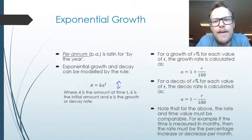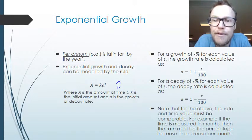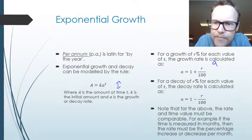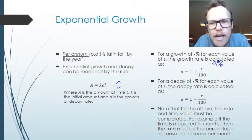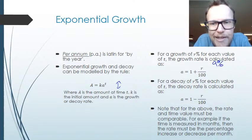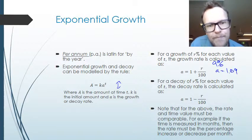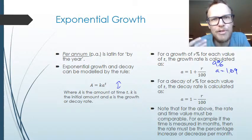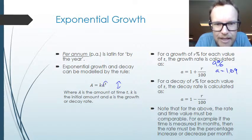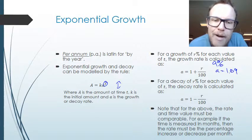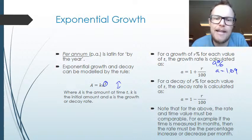When determining the growth rate — the value for A — if we know the percentage increase for every value of T, the growth rate is 1 plus R over 100. For example, if the growth rate is 9%, then R is 9, so 9 over 100 plus 1 means the value for A is 1.09. That multiplies the initial value each time, and every additional time period we multiply by it again — that's why T is the power.